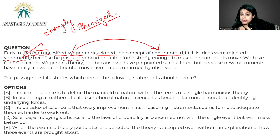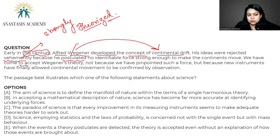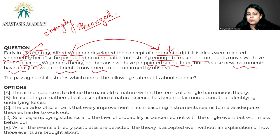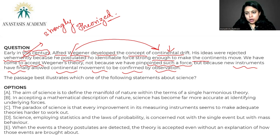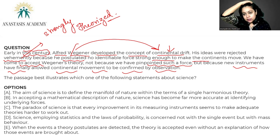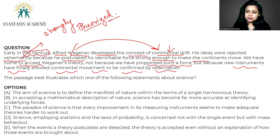We have come to accept Wegener's theory now — not because we have pinpointed such a force, but because new instruments have finally allowed continental movement to be confirmed by observation. The problem remains: what Wegener could not pinpoint has not been pinpointed even now. But at least we have instruments confirming the drifting process. We may not have the cause yet, but the process is confirmed. The question is: the passage best illustrates which of the following statements about science?